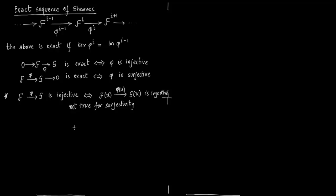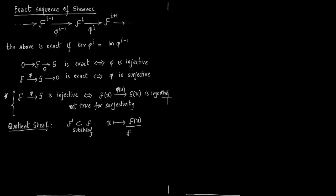Now we define another important concept: the quotient sheaf. Take F′ as a sub-sheaf of F. The quotient sheaf assigns to every open set U of the topological space X — on which we are defining these sheaves — the quotient group F(U) / F′(U).